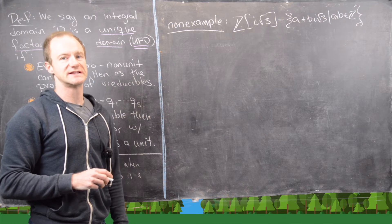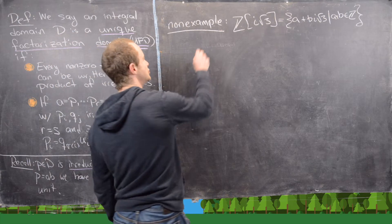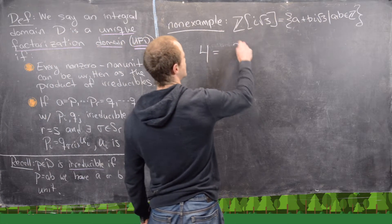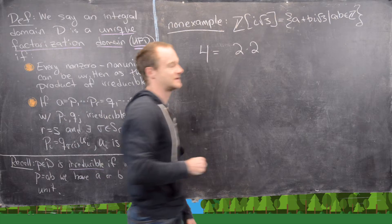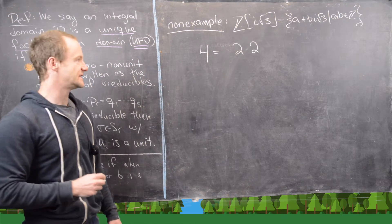The next thing I want to notice is you can take the number 4 and factor it two different ways. So we can factor 4 the normal way, 2 times 2, which is happening within the integers.